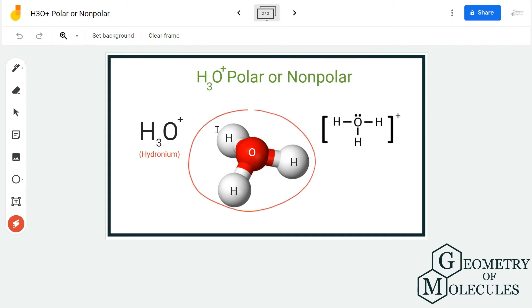It is a little bent and there is one lone pair of electrons present on the oxygen atom. So generally, the molecules in which the central atom has lone pairs are generally polar.